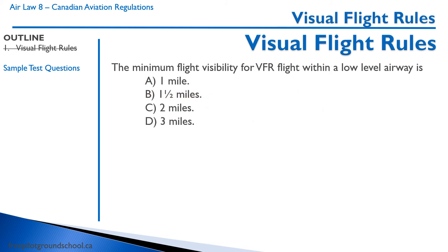Here's a tricky one requiring earlier knowledge: the minimum flight visibility for VFR flight within a low-level airway is — you first need to recall that a low-level airway is controlled airspace. In controlled airspace, we need flight visibility of three miles, so the correct answer is D.